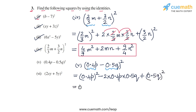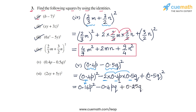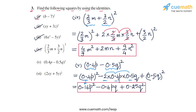Now, 0.4p whole square is 0.16p squared — make sure you understand this, the square of 0.4 is 0.16. Then for the middle term, 2 times 0.4 times 0.5 gives 0.4, so the second term is minus 0.4pq. The last term, 0.5q whole square, is 0.25q squared, because the square of 0.5 is 0.25. So the expression 0.16p squared minus 0.4pq plus 0.25q squared is the answer for part 5.